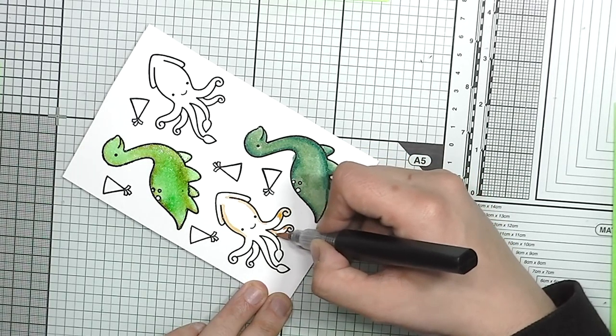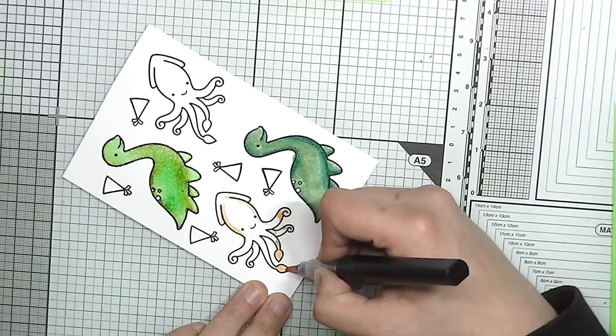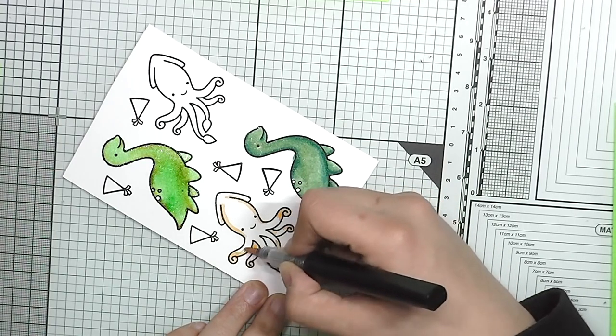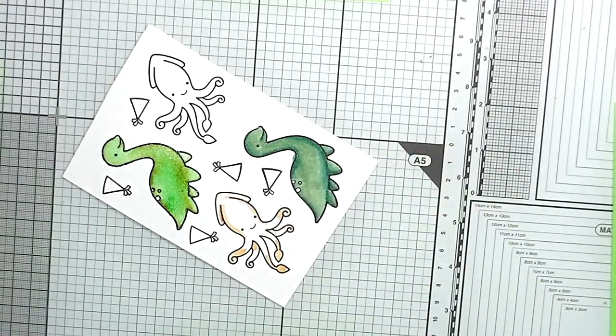So here I'm using a sort of beige color, I think it's biscuit or something, and I mix it with a yellow color for this Kraken.